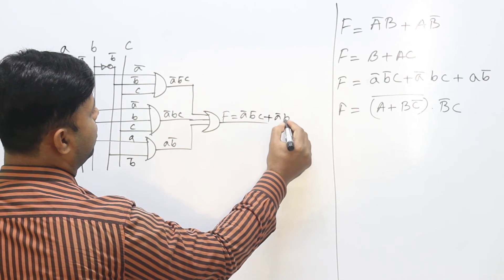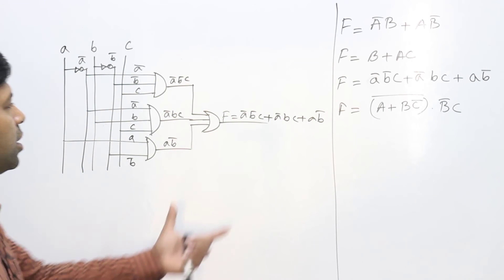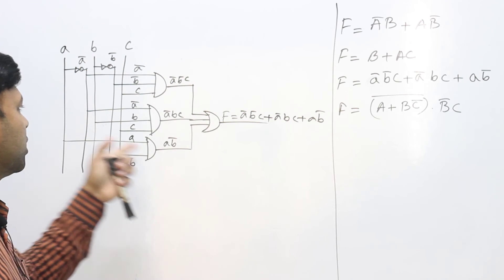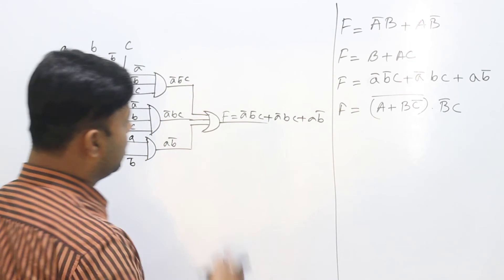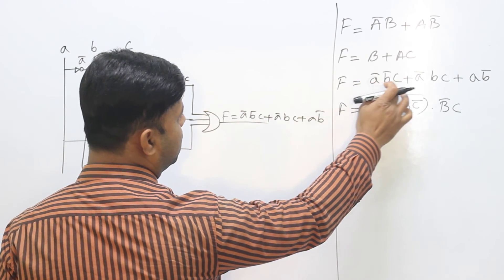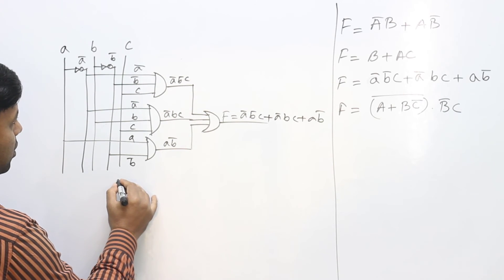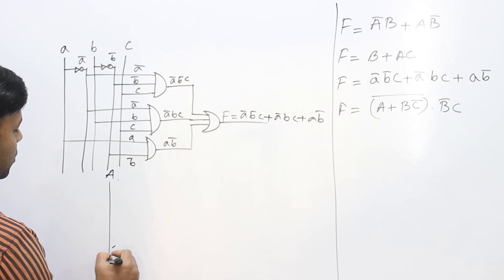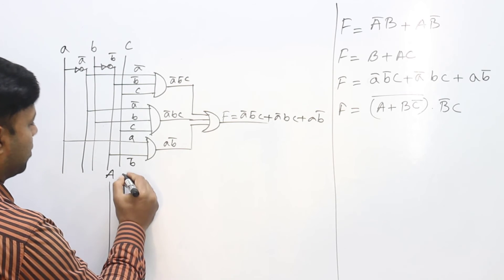The final output expression is X equal to A NOT B C plus A B NOT C plus A B NOT. Here is another logical function — a circuit. In order to build it, we take the variables.